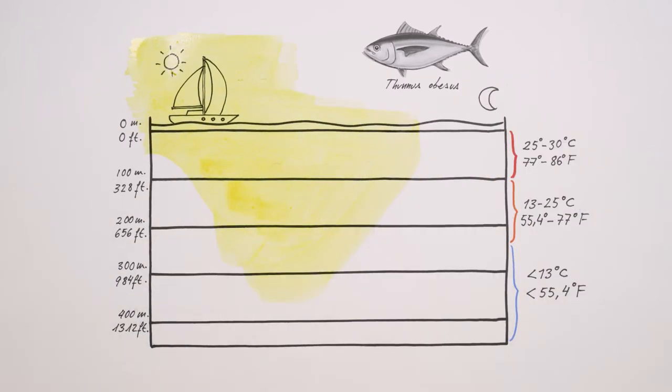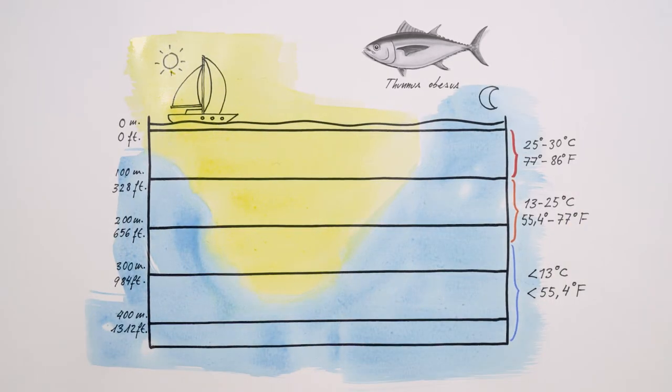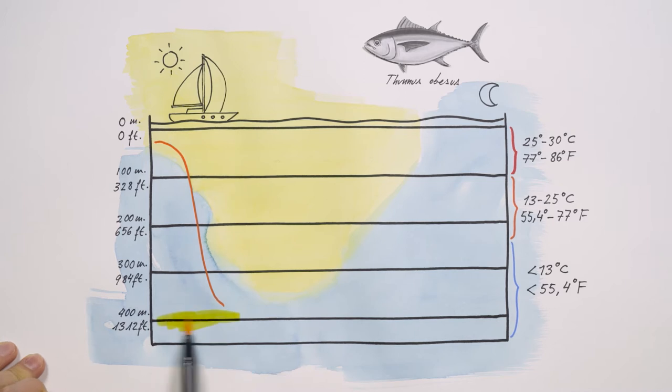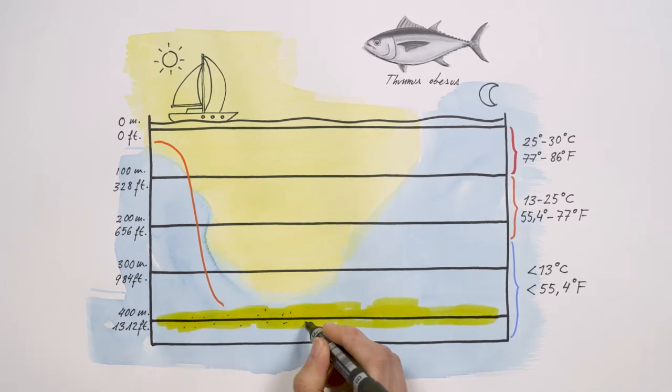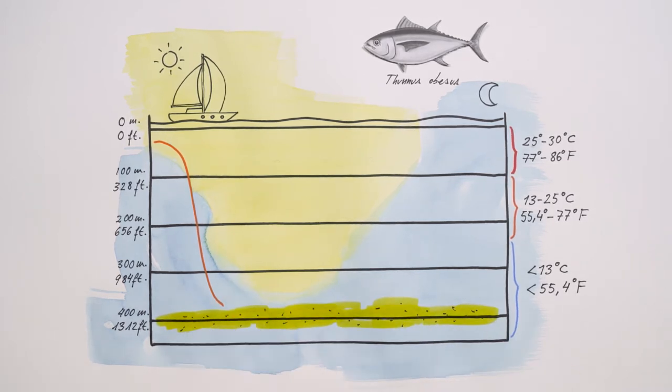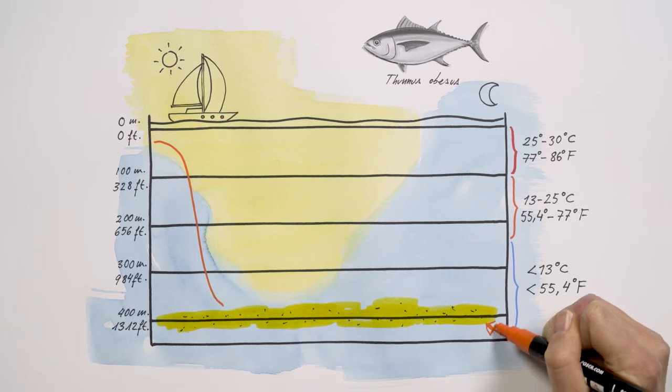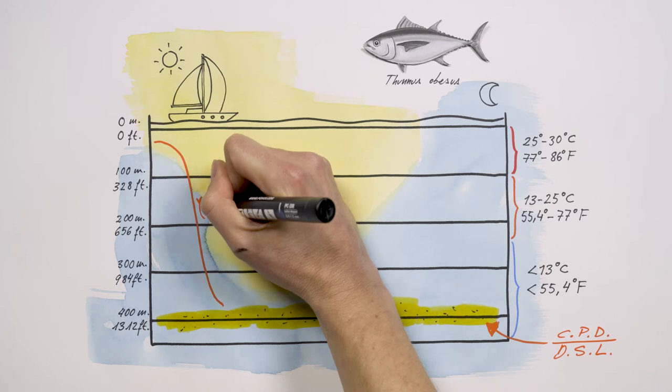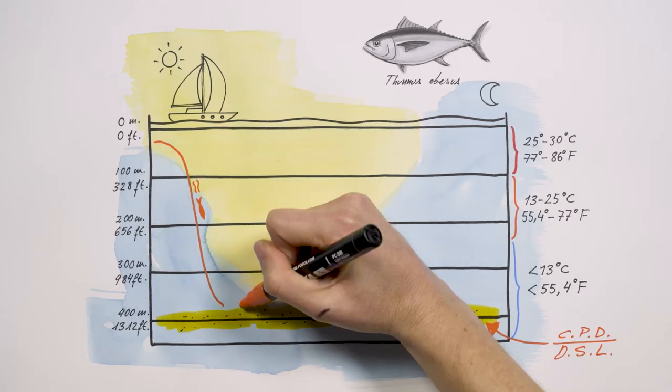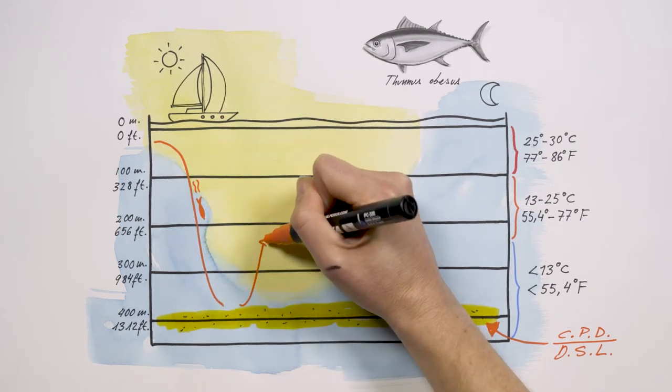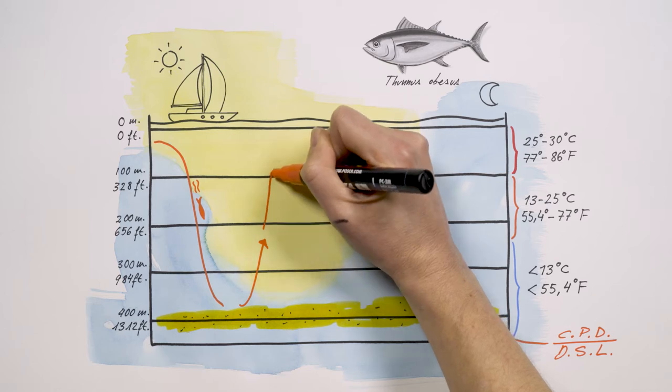Our bigeye feeds during the day. As the sun rises and the waters light up, it descends to cold water below 300 meters to feed on the prey that accumulates in the so-called deep scattering layer, or DSL, or CPD in Spanish. But spending time in such cold water requires a lot of energy, so during the day the bigeye will rise to the surface at times, mostly in order to warm up.